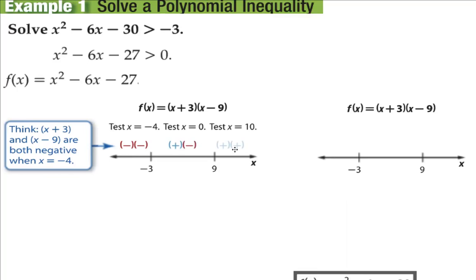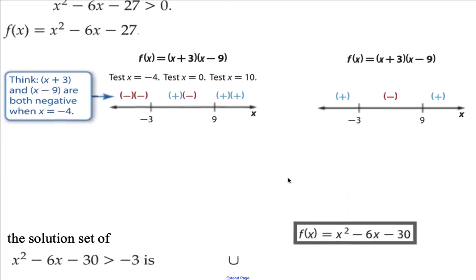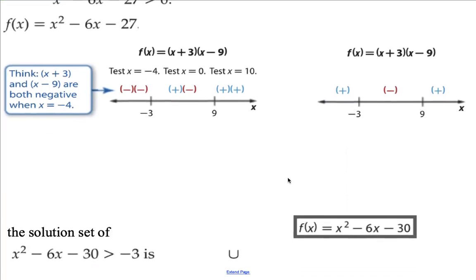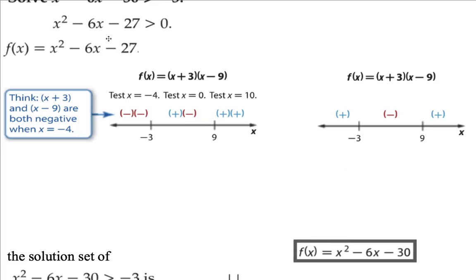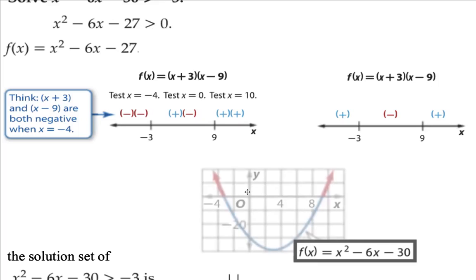Likewise for 0 and for 10. Our sign chart considers factors that are multiplied together: two negatives give a positive, a positive and a negative give a negative, and two positives give a positive. Now I have my sign chart completed and I should be able to figure out when this nonlinear inequality is greater than zero — meaning, where is it above the x-axis?